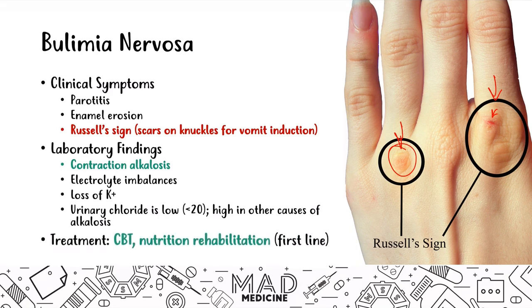The treatment for bulimia is cognitive behavioral therapy to help the patient understand that their body is normal and healthy, as well as nutrient rehabilitation. You can also give SSRIs to treat any underlying causes like OCD or body dysmorphic disorder. The mainstay of both bulimia and anorexia is cognitive behavioral therapy combined with nutrient rehabilitation.